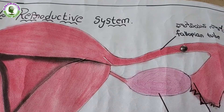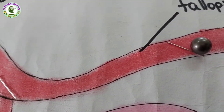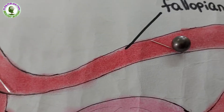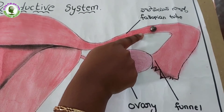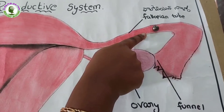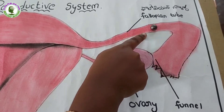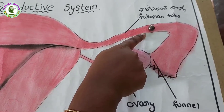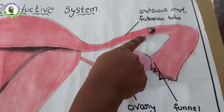So fertilization takes place in the fallopian tube. The membranes on the ovum thicken as soon as fertilization takes place, which prevents another sperm from entering the egg.